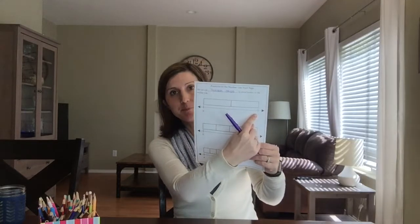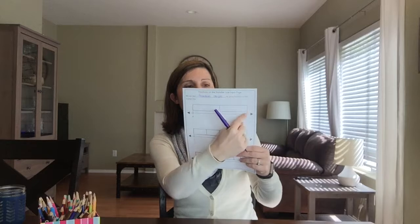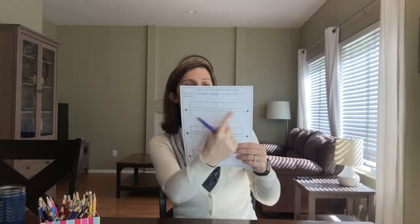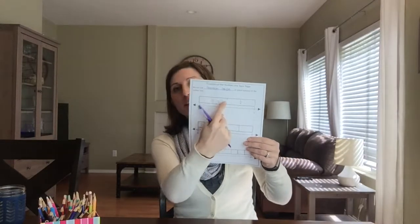You can see my number line starts at zero and goes to one. I've got my fraction strip set right on top of it so that it starts on zero and ends on one. It's broken into two pieces, so that means it's showing one half and one half. I know I'm going to be putting halves on this number line because my fraction strip is in halves. So you want to write that one half on there.